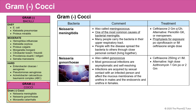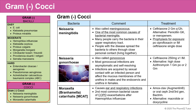The next gram-negative cocci is Neisseria gonorrhea, also called gonococcus. Most gonococcal infections are asymptomatic and self-resolving — acquired by sexual contact with an infected person. We use ceftriaxone 250 mg times one dose IM to treat it; alternatively, high-dose azithromycin 1 or 2 grams orally can be used. The third gram-negative cocci is Moraxella catarrhalis, often known as MCAT. MCAT causes ear and respiratory infections and is the second most common bacterial cause of COPD exacerbations after Haemophilus influenzae. We can treat it with amoxicillin-clavulanate, an oral cephalosporin, or Bactrim; alternatively, macrolides or doxycycline can be used.